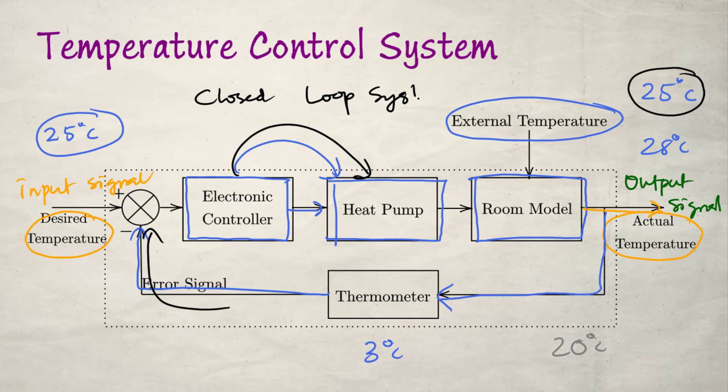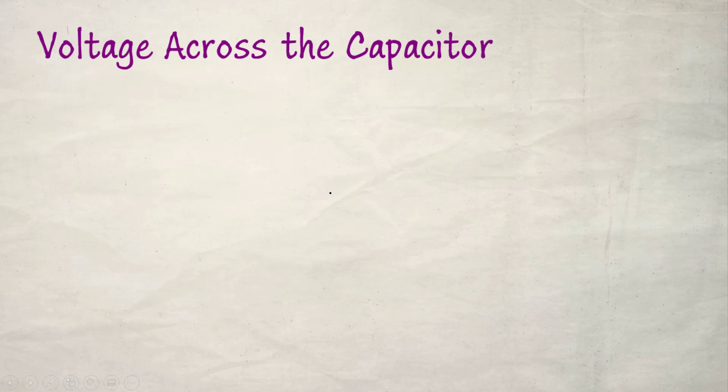This is why with a split AC you can sometimes hear the sound stop and then start again after some time — that is because of this temperature control system. It is also a closed loop system, with an input signal, an output signal, and the AC system as a whole.